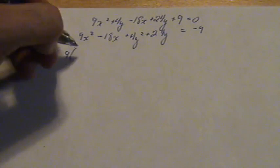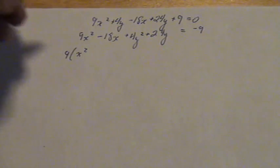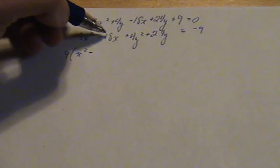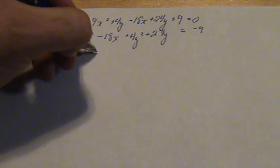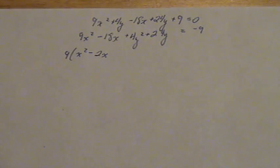We are going to factor out the 9, giving us x squared minus, the 9 goes into that 18 twice, so it is minus 2x.